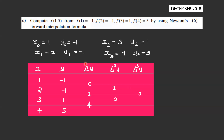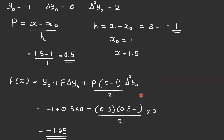From the forward difference table, we read: y₀ = -1, Δy₀ = 0, Δ²y₀ = 2, Δ³y₀ = 0.